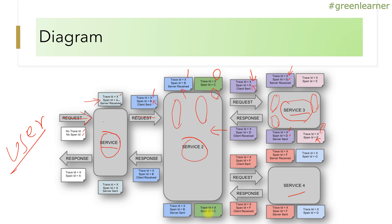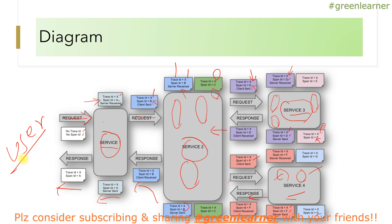The response comes back to service 2 with span ID 'E'. The request is further sent to service 4, which gets span ID 'F'. Service 4 has two tasks: span ID 'F' for the first task and span ID 'G' for the second. When giving back the response, span IDs F and G are returned with the trace ID remaining the same throughout. The response returns to service 1 with span ID 'B' and finally back to the user with span ID 'A' and trace ID 'X'.